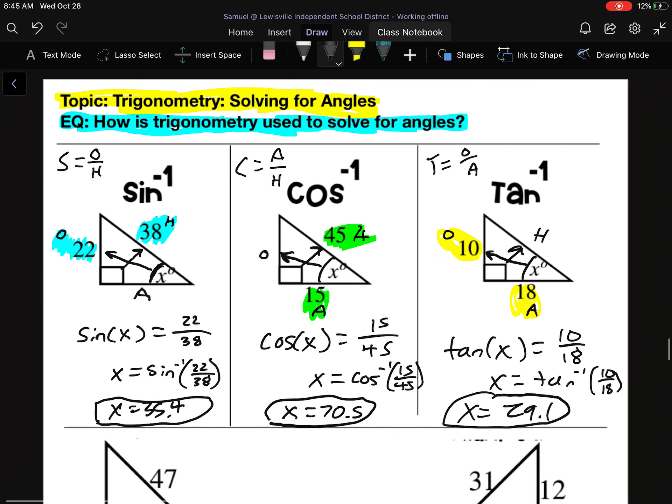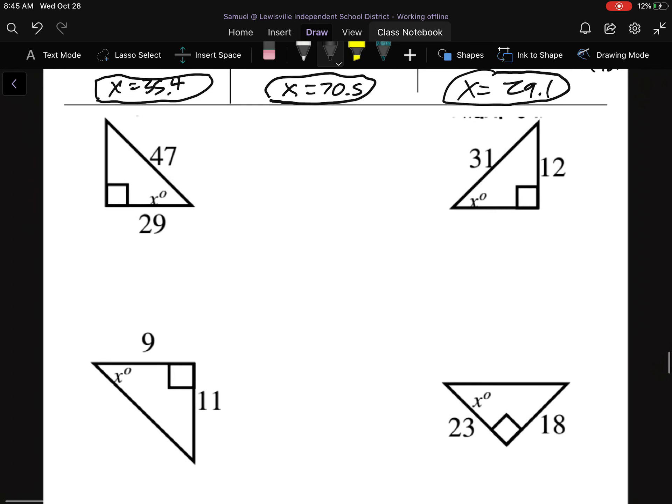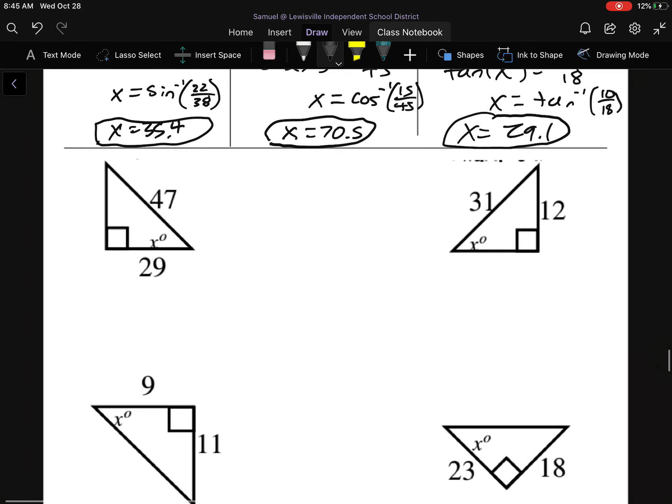Now, of course, those ones were relatively easy because we could see that they were labeled sine, cosine, tangent. So we knew what we were using. The problems that you're going to be doing, you're going to have to kind of decide on your own which one you're using. And that's going to rely fully on your ability to draw these arrows.